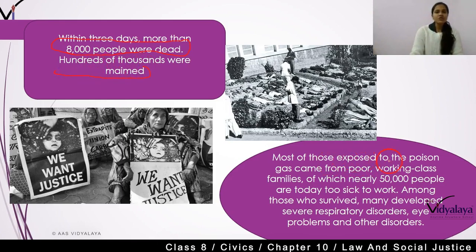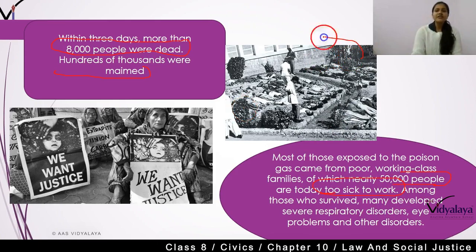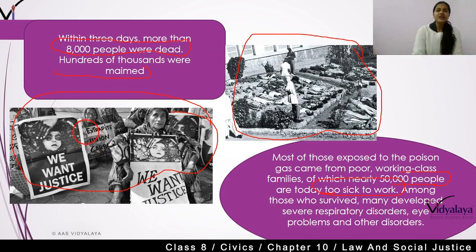Most of those exposed to the poison gas came from poor, working class families. Nearly 50,000 people are today too sick to work. You can see that the worst impact of this gas leak fell on workers who belonged to poor working class families, and until now 50,000 people are not able to work because they are too sick from contact with these poisonous chemicals and gases. Among those who survived, many developed serious respiratory disorders, eye problems, and other disorders. Many people were not able to see. So this is the worst industrial disaster — the Bhopal gas tragedy.